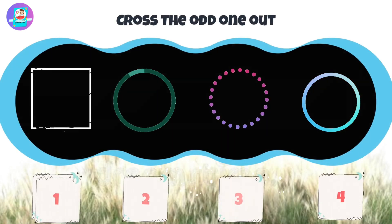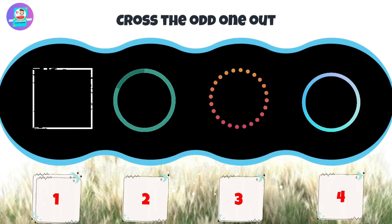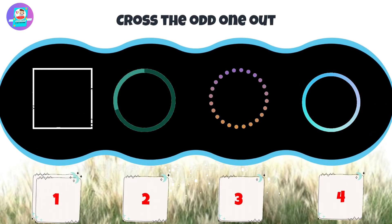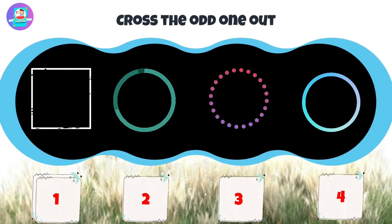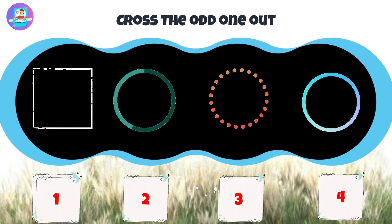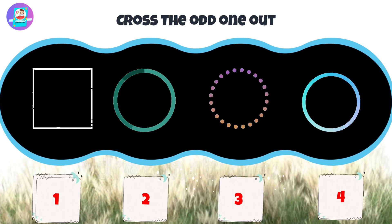Okay, next, there are 4 pictures: 1, 2, 3, 4. Put the odd one out.